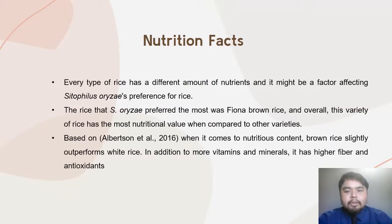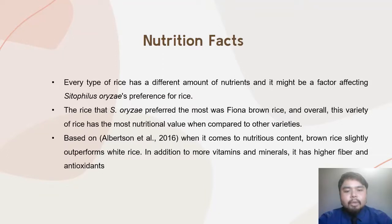The nutritional information is available for all forms of rice. We know that rice falls under carbohydrates in the food pyramid, but rice is also a good source of protein, phosphorus, vitamins, iron, and calcium. Every type of rice has a different amount of nutrients, which might be a factor affecting Sitophilus oryzae preference for rice. The rice that Sitophilus oryzae preferred the most was brown rice, and this variety has the most nutritional value when compared to other varieties, which may help encourage Sitophilus oryzae to select it. Based on Albertson et al. 2016, brown rice outperforms white rice in nutritional content, with higher fiber and antioxidants.